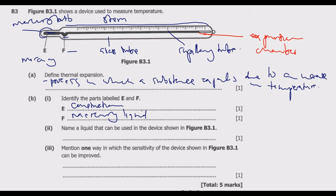Part 2 of question B: name a liquid that can be used in the device shown in figure B3.1. The liquid that can be used is mercury. You can either use mercury or alcohol, but mostly mercury is used.